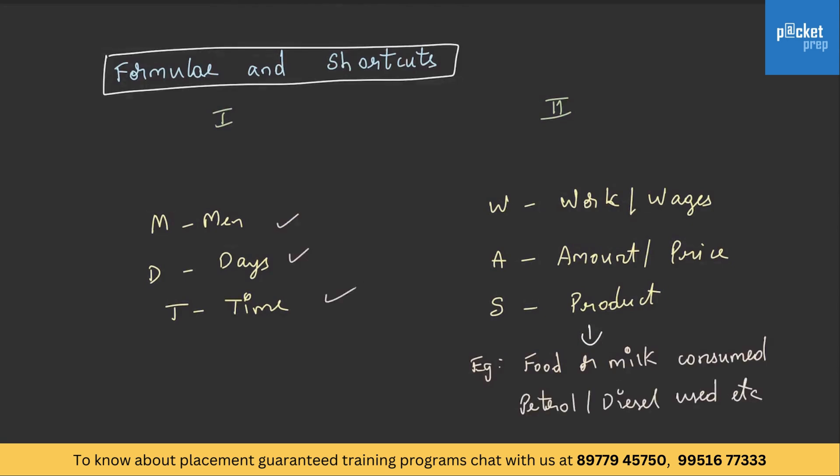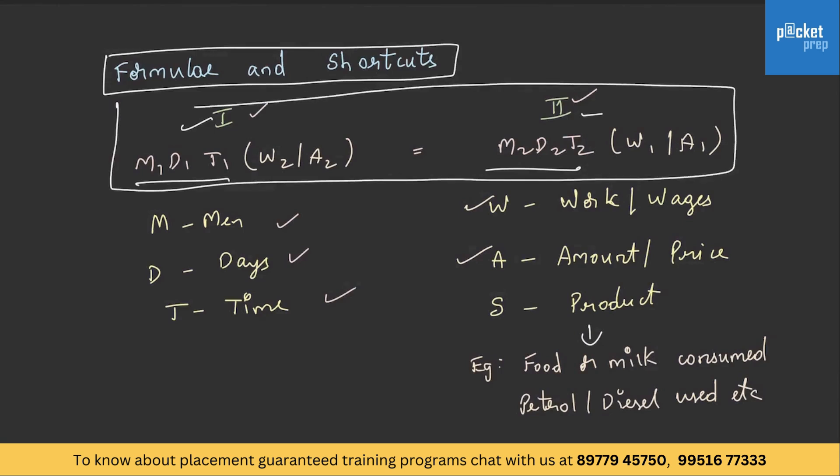Having understood all these, the formula is as follows: M1*D1*T1 is equal to M2*D2*T2. As there are two statements in the question, I have named it as M1 and here M2, similarly D1, T1 and D2, T2. Up to here, everything given in statement 1 is written below it, and statement 2 is written below it. If there are any additional elements like work or wages or amount, then these values are interchanged. That is W2 or A2 here, it will be W1 or A1.